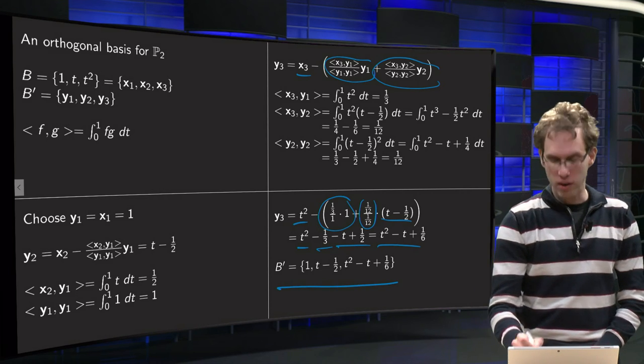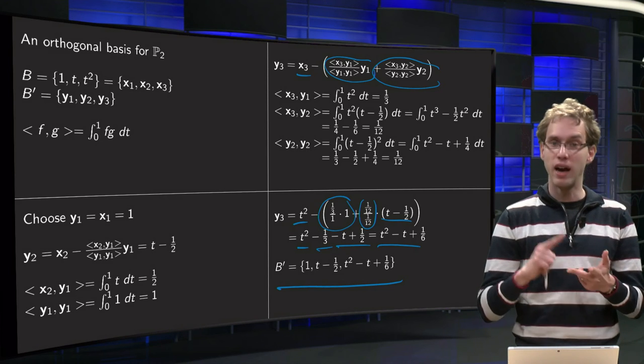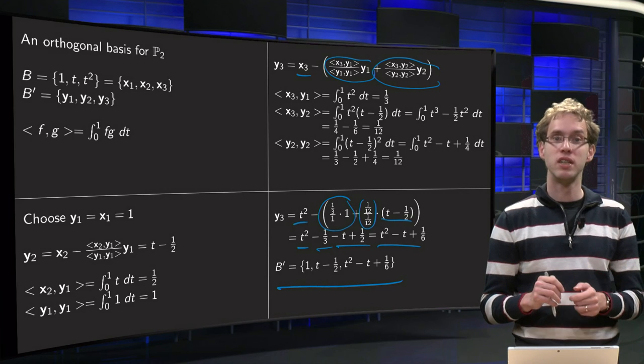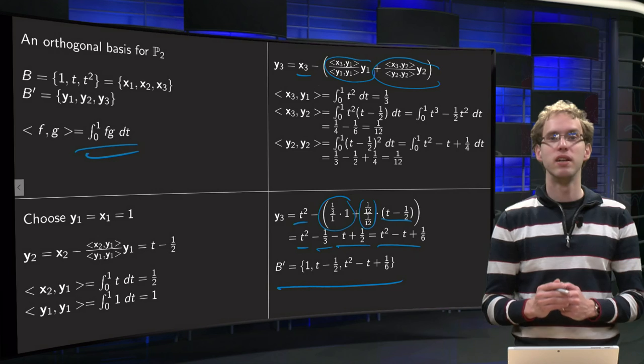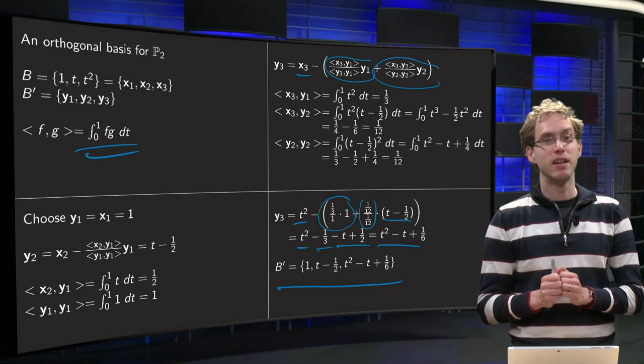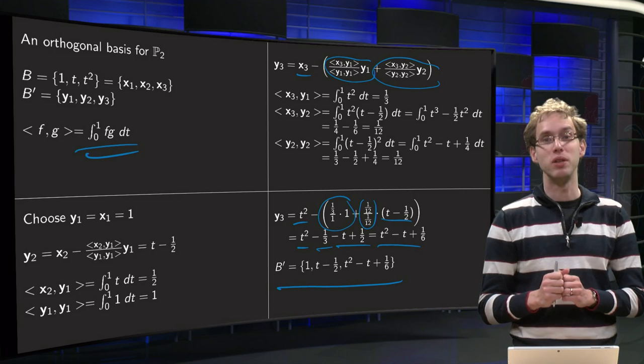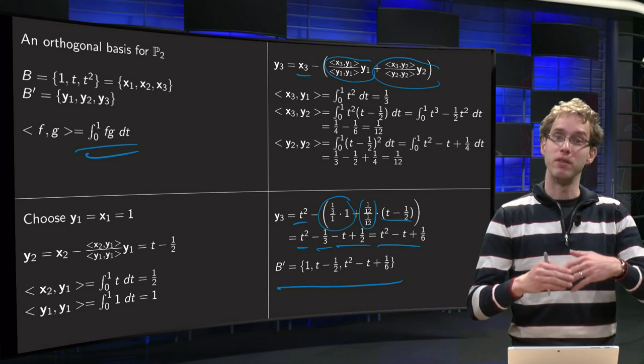And there we have our orthogonal basis for p2 consisting of 1, t minus one half, and t squared minus t plus 1 over 6. Remember orthogonal with respect to the inner product we defined. So as you see you can apply Gram-Schmidt just in the same way as you did with normal vectors in Rn, because we have an inner product now.